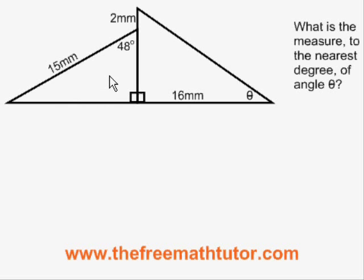In that triangle, we have the 48 degree angle and the 15 millimeter hypotenuse. We can solve for the remaining angles and sides in this triangle. But the one that interests us is this side here that is adjacent to the 48 degree angle, because that side is partially shared by the triangle on the right.